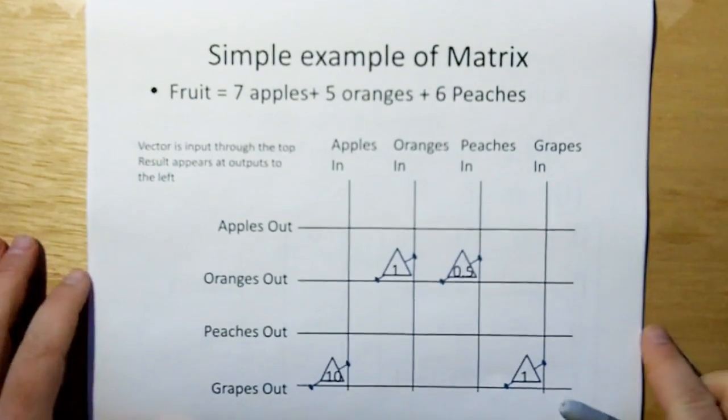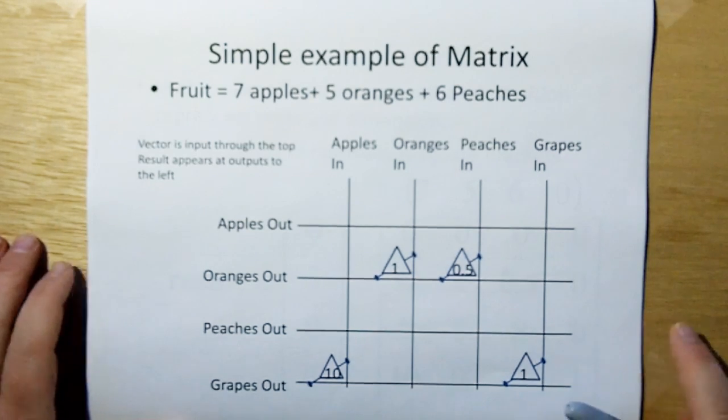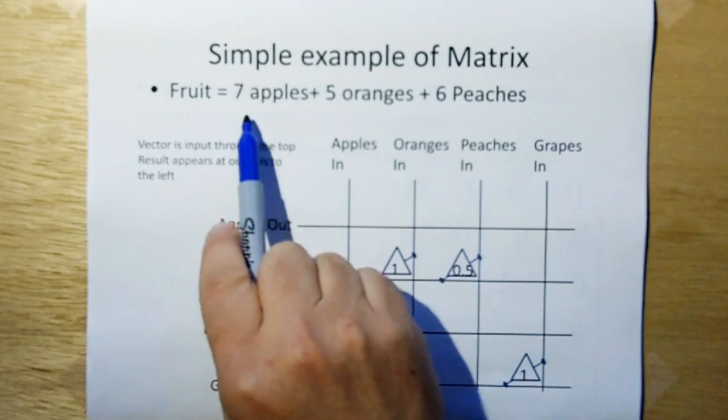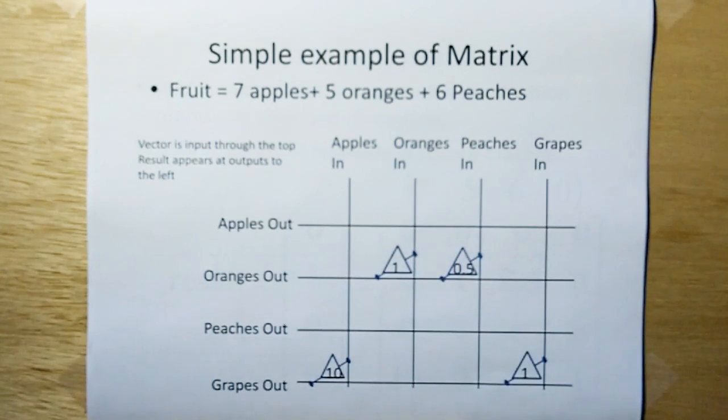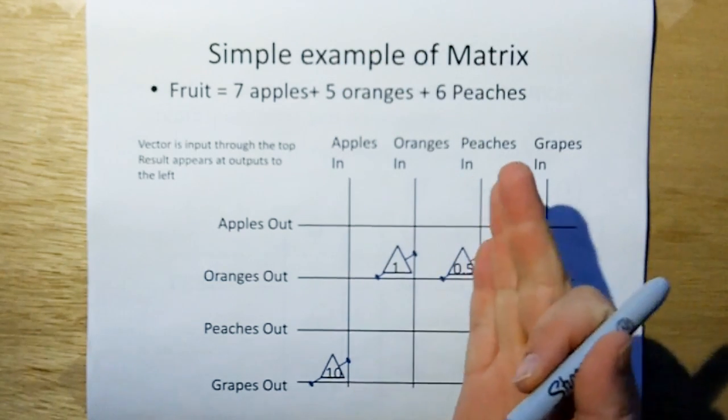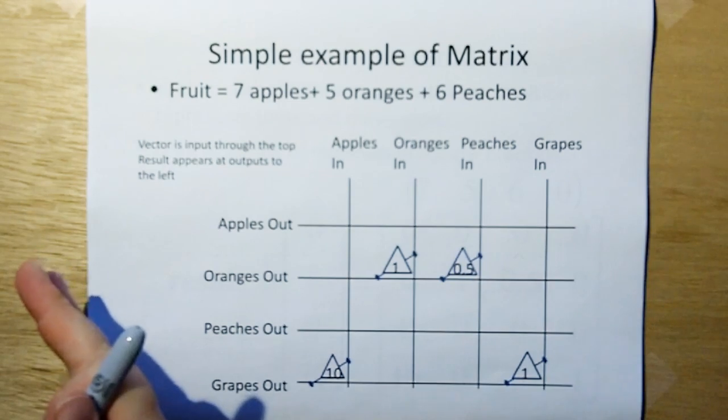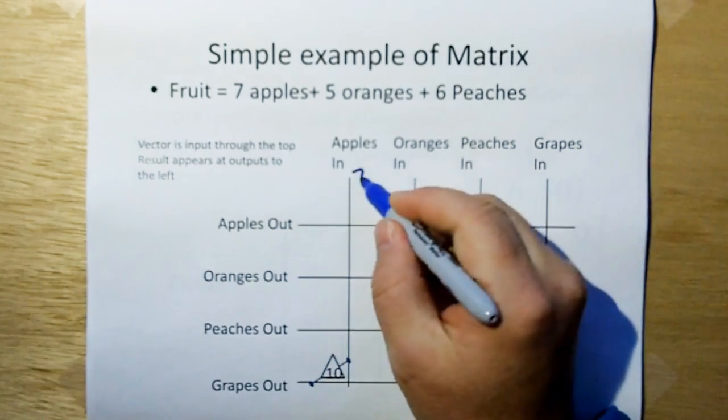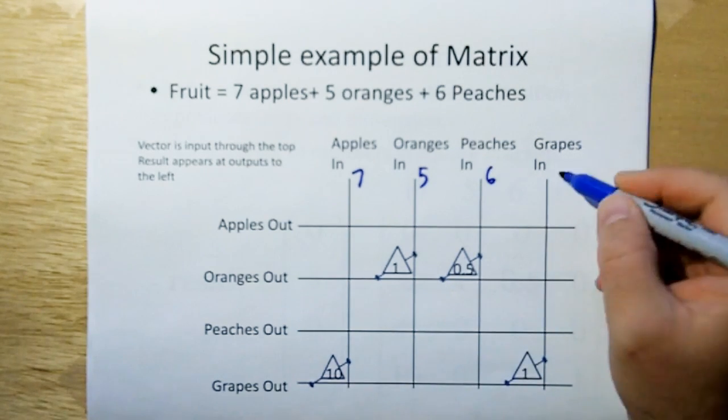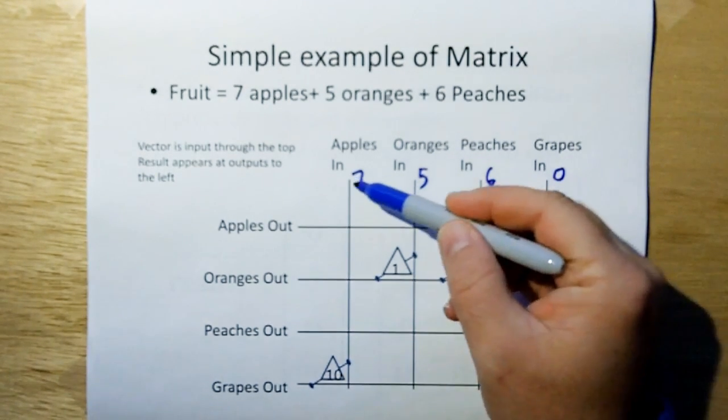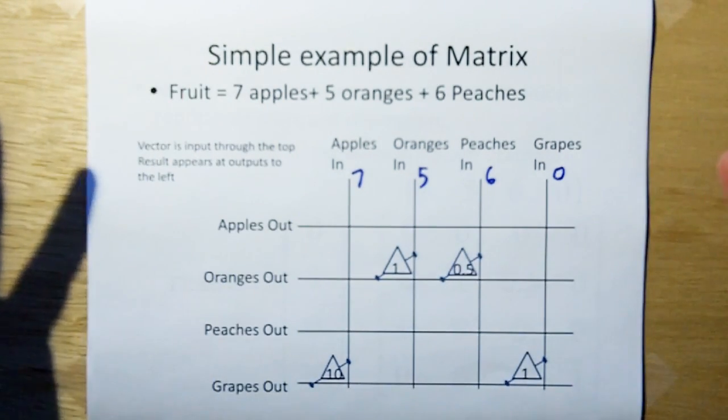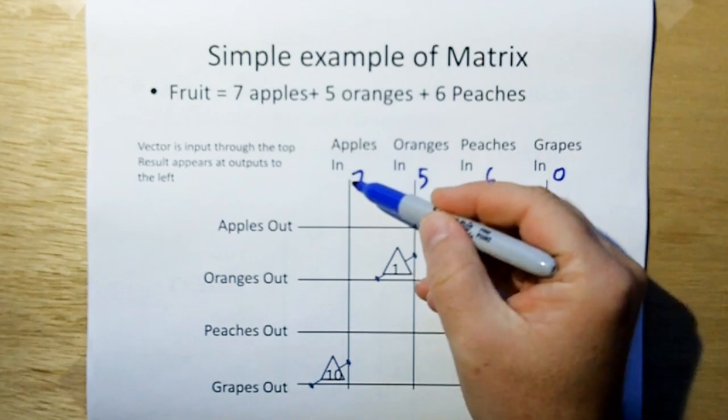Okay, what's a matrix? Well, you can look at a matrix as kind of like a machine or a circuit, where given a fruit vector—a fruit vector of seven apples, five oranges, and six peaches—a matrix takes the vector in from the top and then outputs an output vector to the left. This is like a cross point circuit that you would have in a lot of FPGAs or something like that.